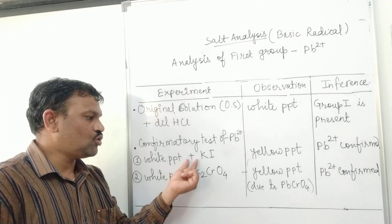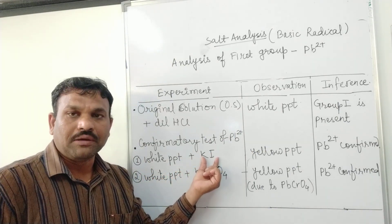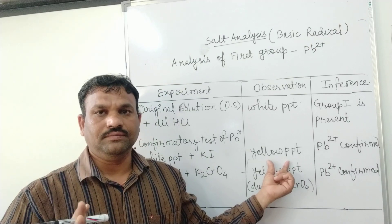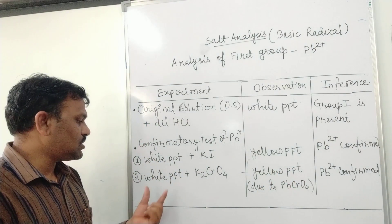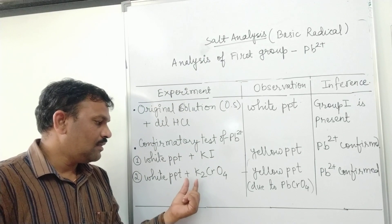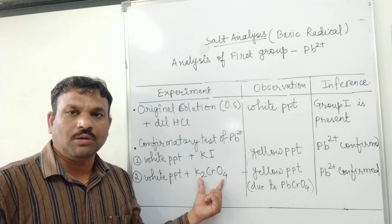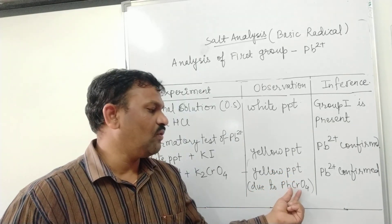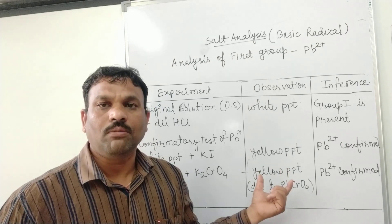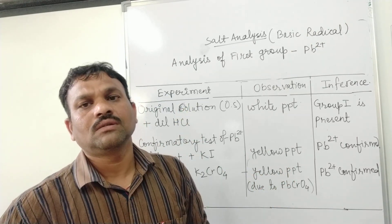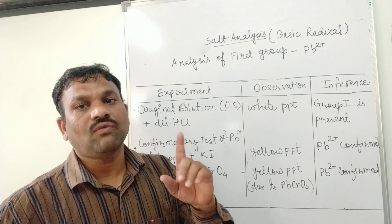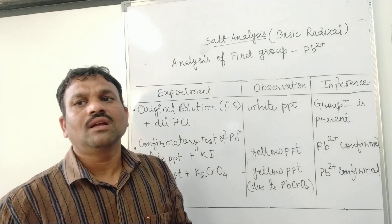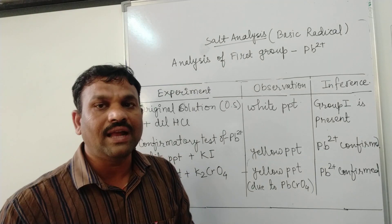In the first confirmative test, the white precipitate is added with potassium iodide solution. Formation of a yellow precipitate indicates the presence of lead ion. In the second test, the white precipitate is mixed with potassium chromate solution (K2CrO4). Formation of a yellow precipitate — due to the formation of lead chromate — confirms the presence of lead ion.